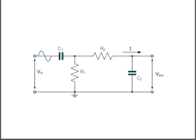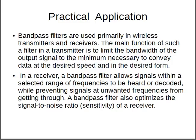This is the circuit for the band-pass filter. Band-pass filters are used primarily in wireless transmitters and receivers. In a transmitter, the main function is to limit the bandwidth of the output signal to the minimum necessary to convey data at the desired speed and in the desired form. In a receiver, a band-pass filter allows signals within a selected range of frequencies to be heard or decoded while preventing unwanted frequencies from getting through. A band-pass filter also optimizes the signal-to-noise ratio of a receiver. Thank you.